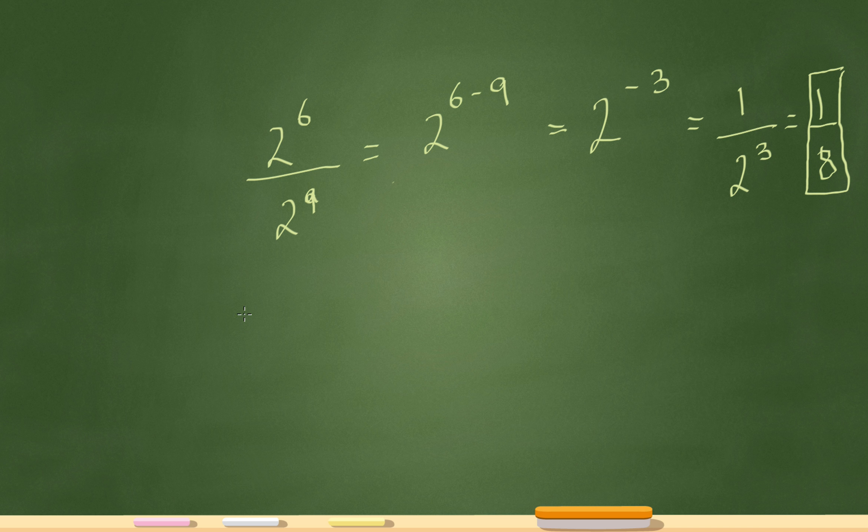Now check something else out too. For some reason you blank out on the test and you just don't remember your rules. Think about it logically. Think about what's happening. 2 to the 6th is, I'm going to write this all out. It might be annoying, but watch.